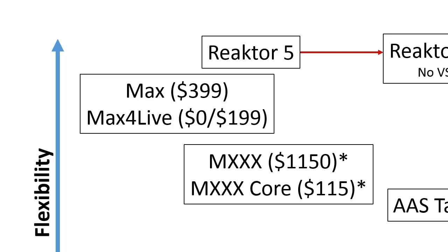I come from a programming background and I find Max, Max for Live, Reactor, and Reactor 6 really hard to program and understand. Reactor 6 only gets bumped up in ease of programming because of the blocks mechanism, but if you have to dive down into the depth of Reactor 5 and Max I find it really hard to figure out what's going on. I know there are people who love it and can do anything with it, but for me it's just really hard to wrap my head around.